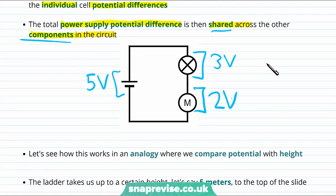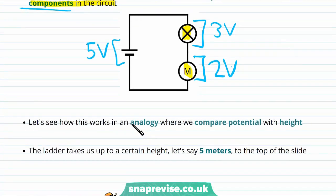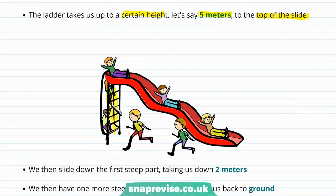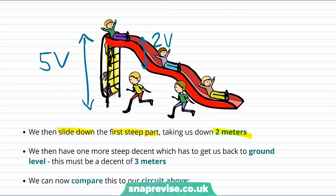We can understand this better with an analogy comparing potential difference to height differences above the ground. Imagine a ladder takes us to 5 meters — this is like the 5 volt battery. Starting at the top of the slide, we slide down the first steep part that takes us down 2 meters, like a component dropping the voltage by 2 volts. If there is only one more steep descent that must take us back to ground level, you'd know how steep it must be.